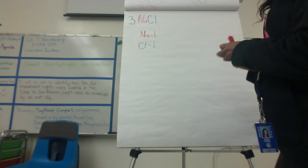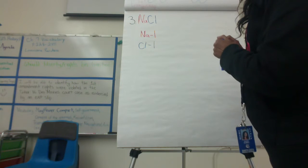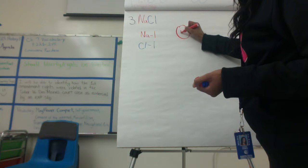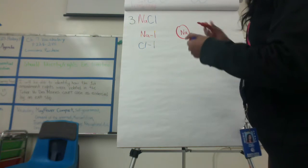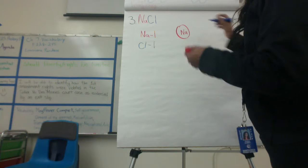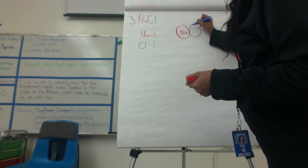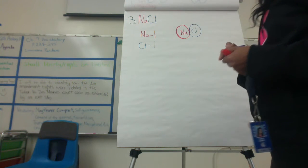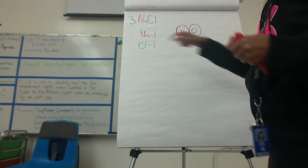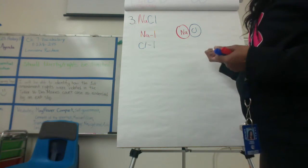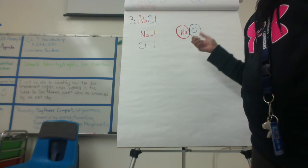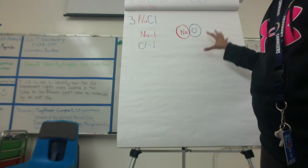To draw it, it's really super easy — just draw one compound. This is NA and this is CL. Am I right? One NA, one CL — yes, I am. That's all you have to do in order to solve the formulas and actually draw them.